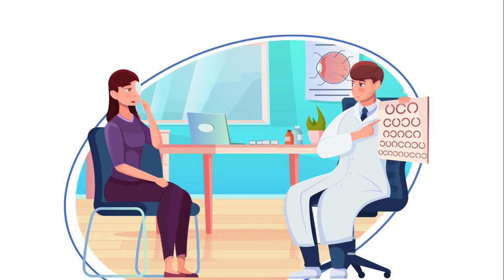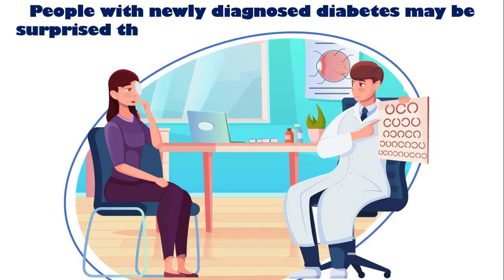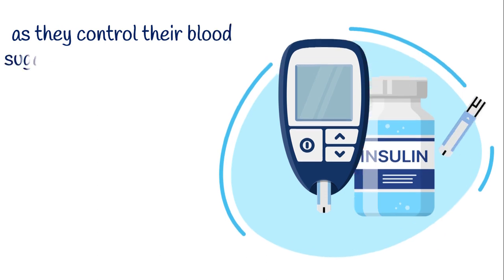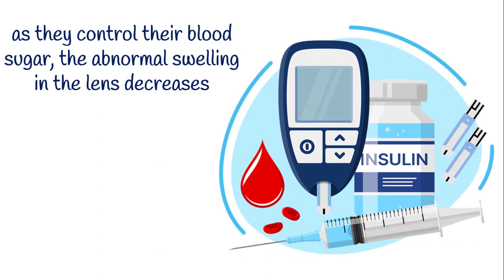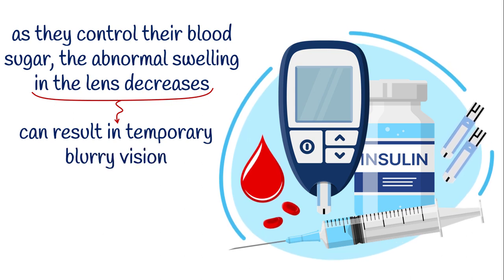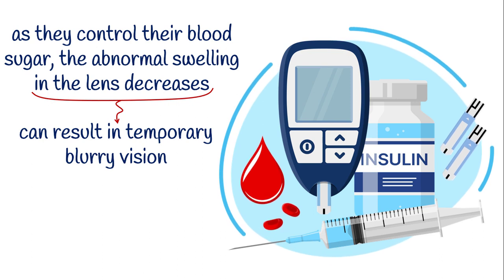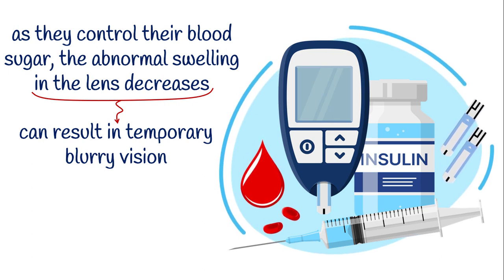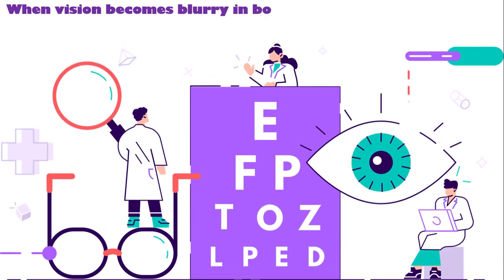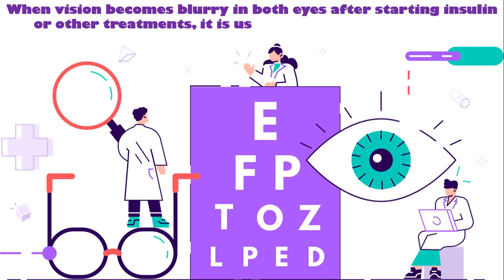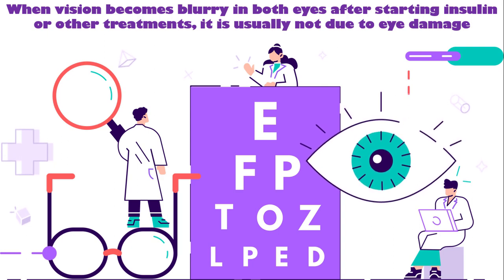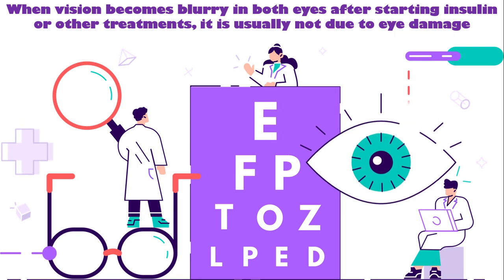Note that in some cases, people with newly diagnosed diabetes may be surprised that they no longer need their glasses to see things far away. However, as they control their blood sugar, the abnormal swelling in the lens decreases. This can result in temporary blurry vision that cannot be corrected with glasses or contacts. These situations can be scary for individuals who have heard about the potential for serious eye damage from diabetes. It's important to understand that when vision becomes blurry in both eyes after starting insulin or other treatments, it is usually not due to eye damage. Instead, it is because the swelling caused by high blood sugar levels in the previous weeks and months is quickly going away.